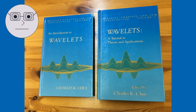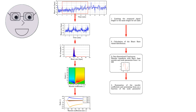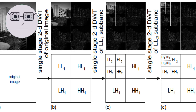Wavelets have a wide range of applications in various fields. Some of the most common applications include signal processing, where wavelets are used to analyze and process signals. They are particularly useful in applications such as audio and image processing, where it is important to analyze both the time and frequency characteristics of a signal.